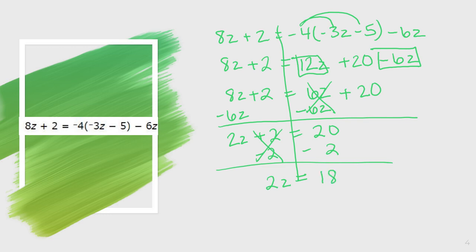My final step is to divide both sides by 2. When I divide by 2, that 2 divided by 2 is 1, so I'm left with z equals 18 divided by 2, which is 9. So z equals 9 is my final answer.